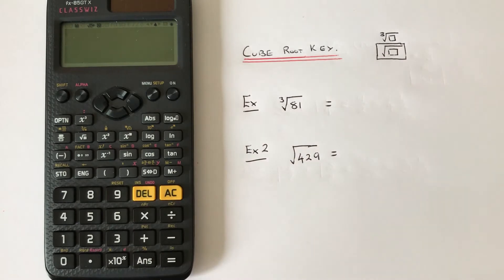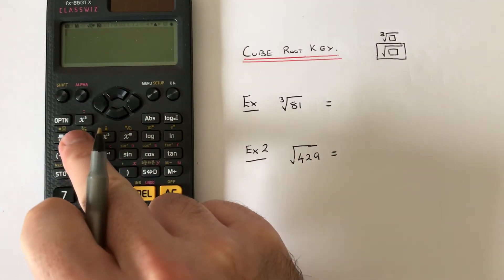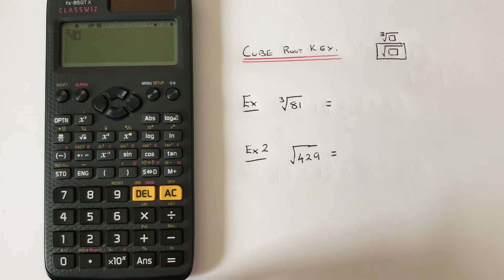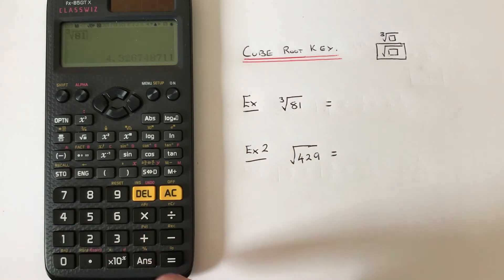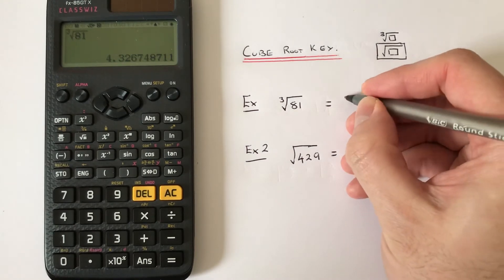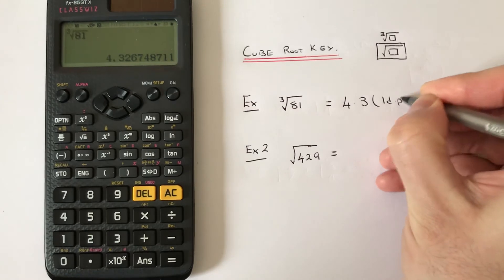Let's have a look at the two examples here. Our first one is to work out the cube root of 81. Press shift square root, and then type in 81. We get the answer 4.3 to one decimal place.